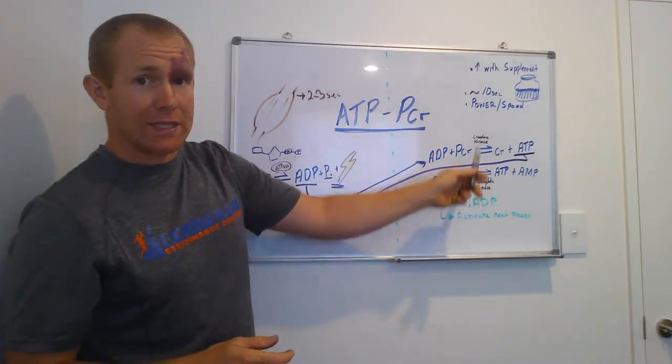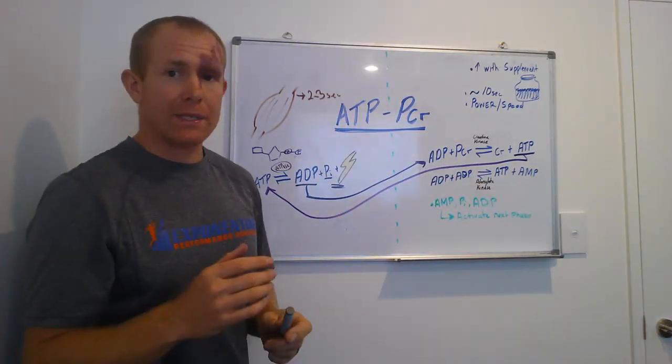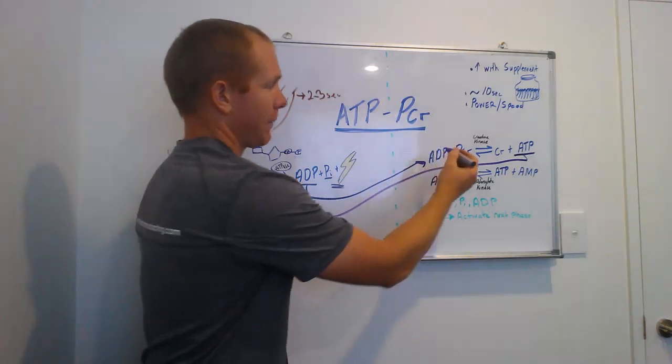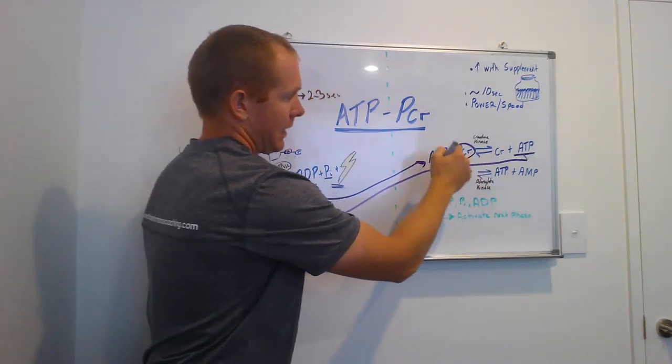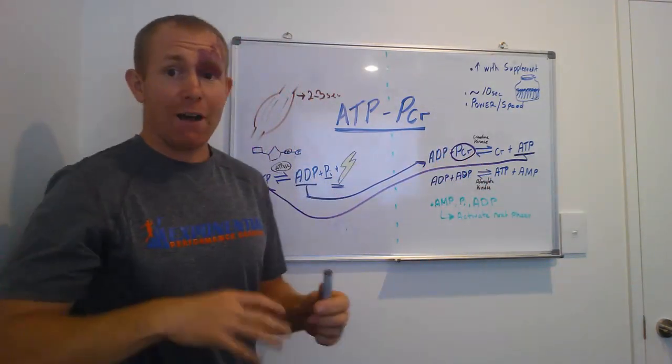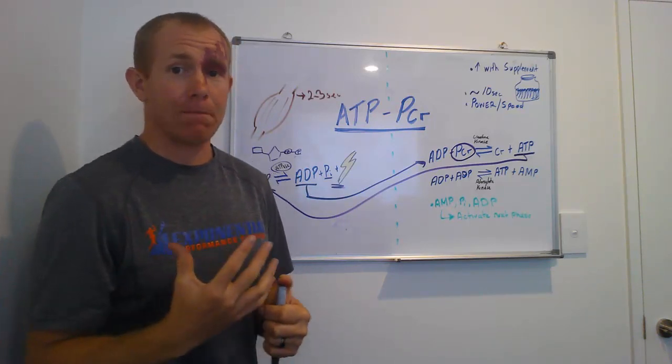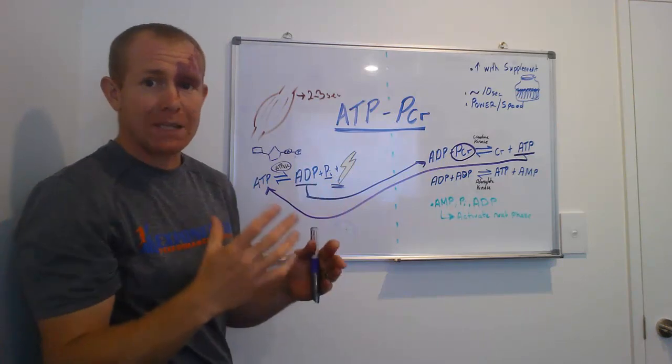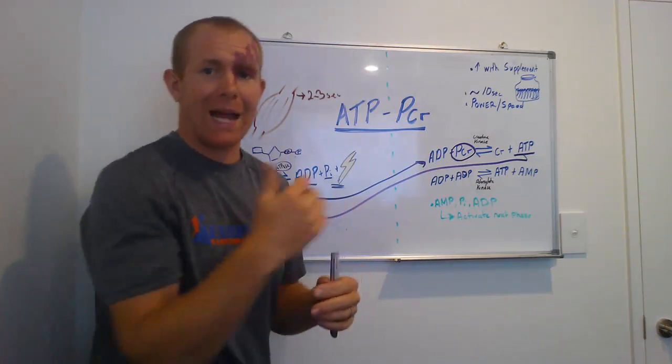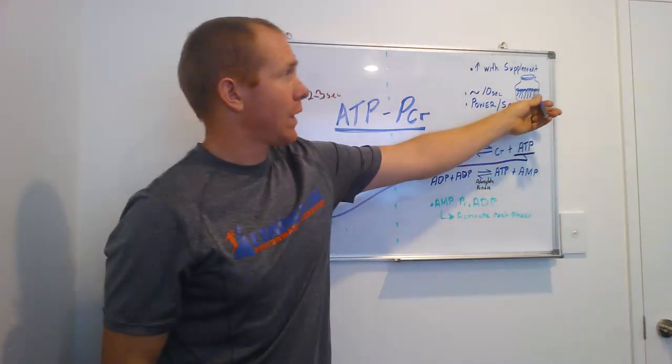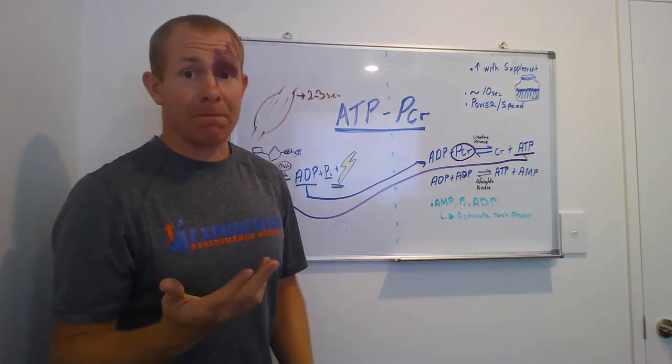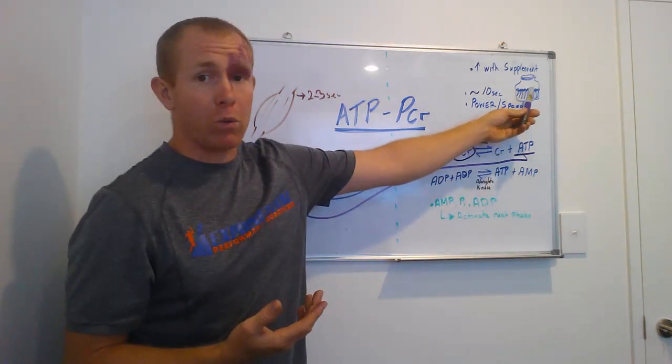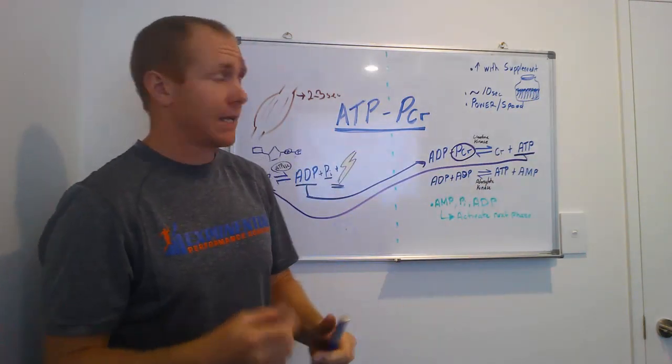We can increase the capacity with supplementation. If we have a look at PCR, if we have more PCR floating around in our system, then we have more PCR to pick up the ADP molecules and turn them back into ATP. And we can do that by consuming creatine. And some of you are probably quite familiar with creatine supplementation.